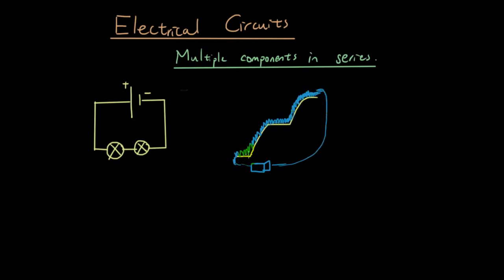A circuit with two components is when the hill is broken down into different sections — you have one hill falling down, then a flat portion, then it starts falling down again, and then we get to the ground.